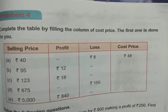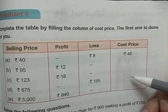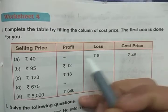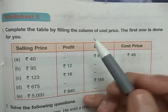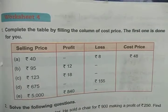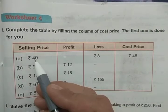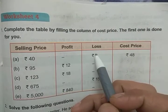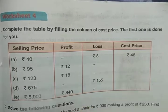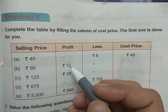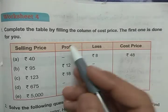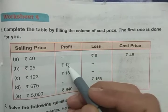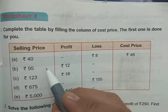We have to complete the table by filling in the cost price column. The first one is done for you. Selling price is 40 rupees and loss is 8 rupees, so to find the cost price we add selling price and loss, giving cost price of rupees 48. In case of profit we subtract: selling price minus profit. Here selling price is rupees 95 and profit is rupees 12, so we subtract.